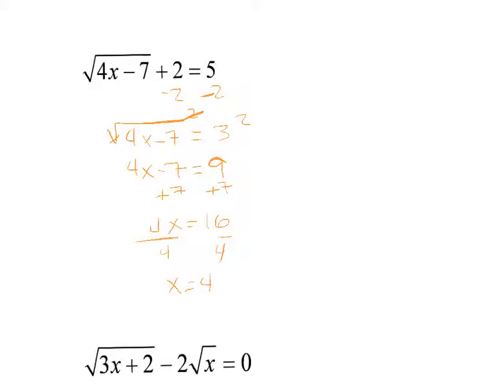Now we definitely want to check — this is where it can get a little sketchy. I plug in 4: 4 times 4 is 16, 16 minus 7 is 9, the square root of 9 is 3, and 3 plus 2 is 5. So it works out this time.